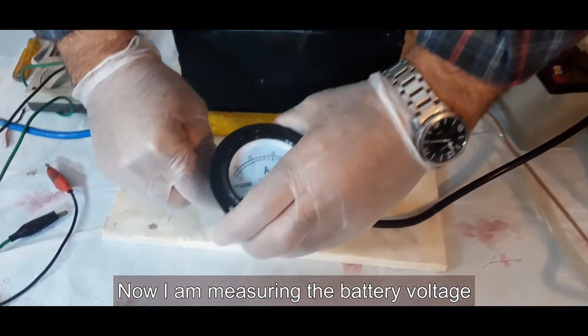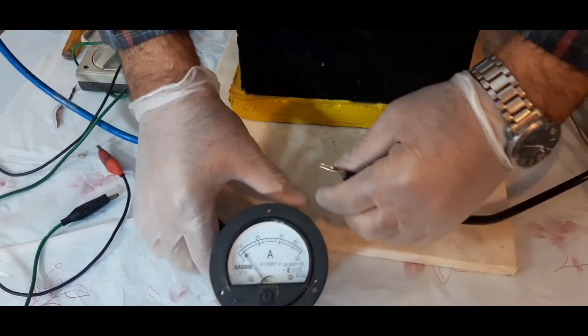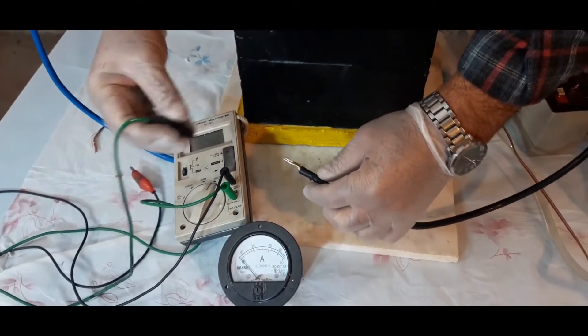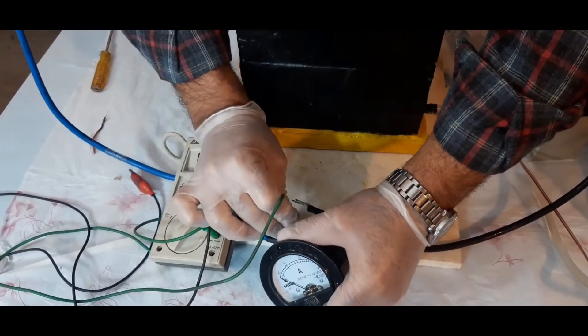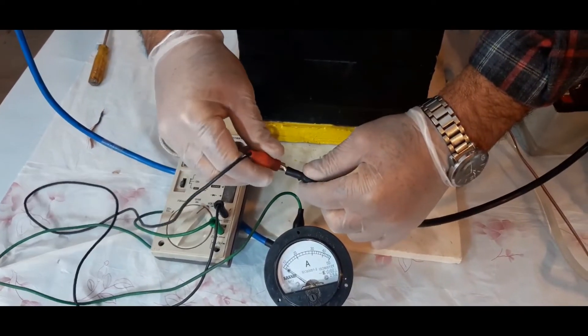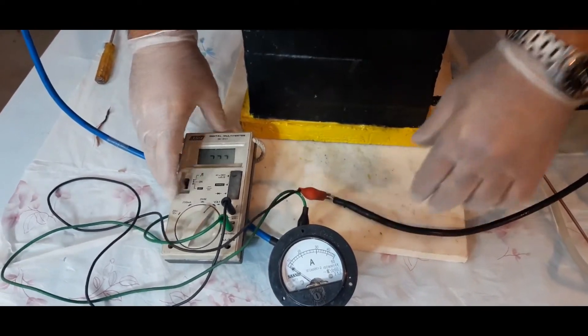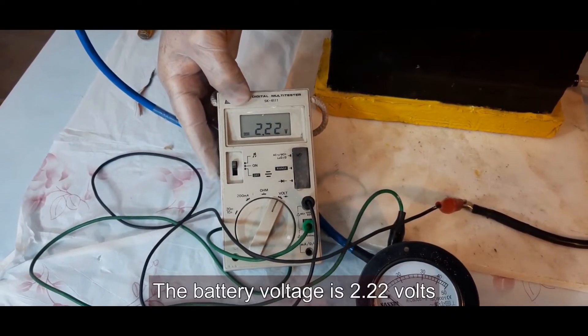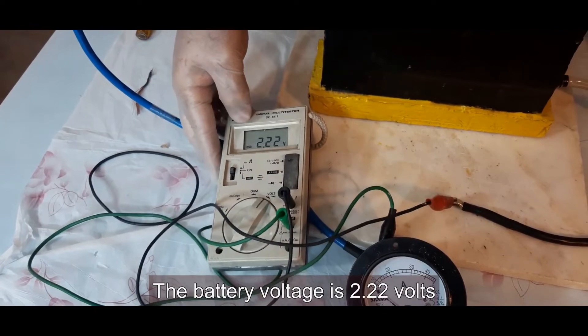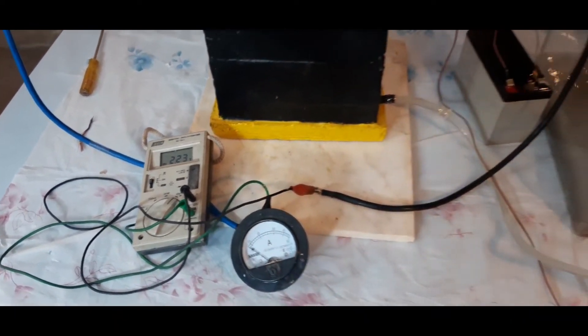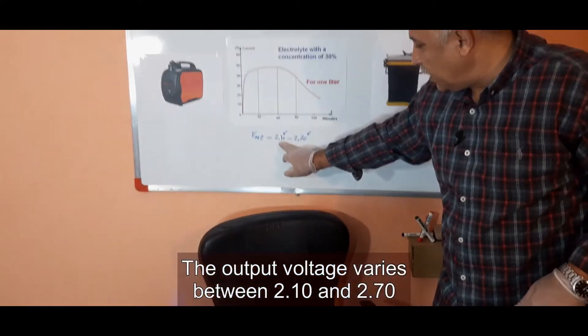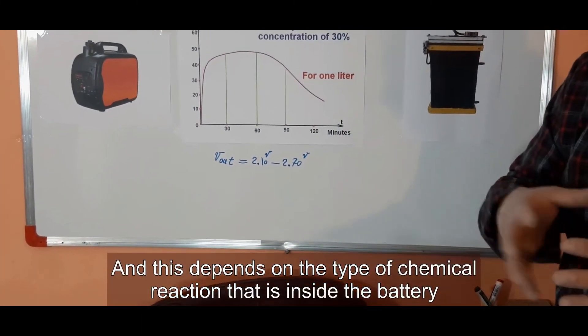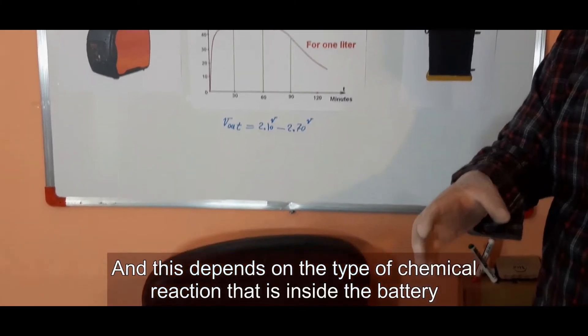Now, I am measuring the battery voltage. The battery voltage is 2.22 volts. The output voltage varies between 2.10 and 2.70 volts, and this depends on the type of chemical reaction that is inside the battery.